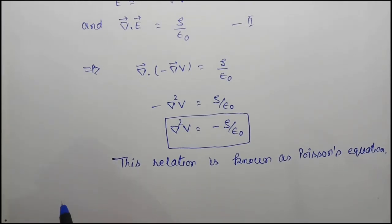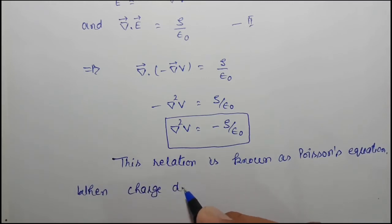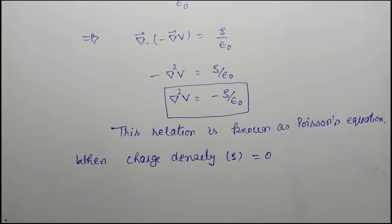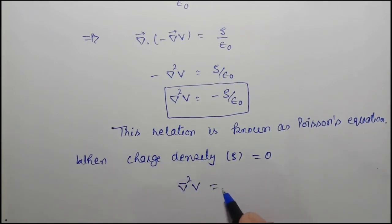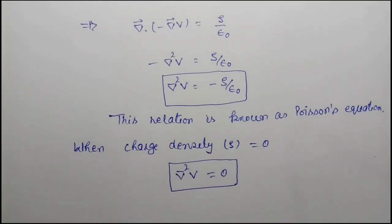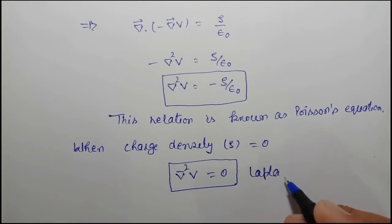When the volume charge density rho equals zero, then del squared V equals zero. This equation is known as Laplace equation.